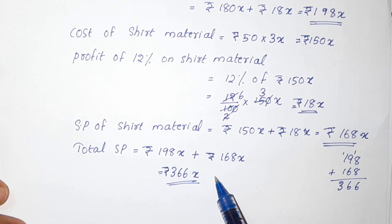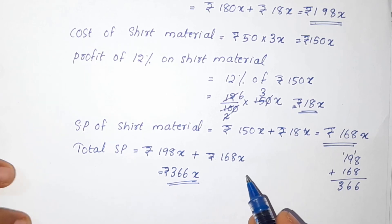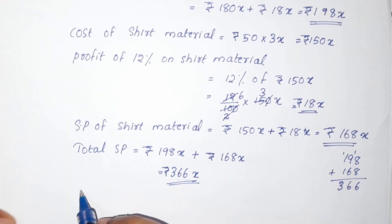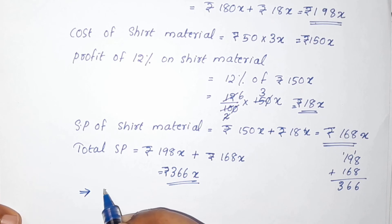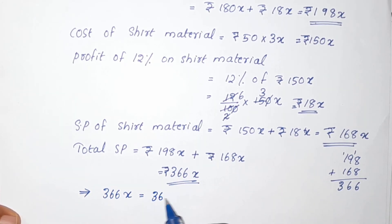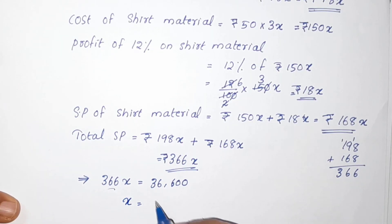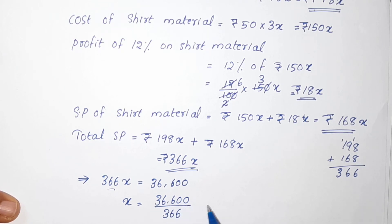The total selling price equals Rs. 36,600. So 366x = 36,600. Dividing both sides by 366, x = 36,600 ÷ 366 = 100.